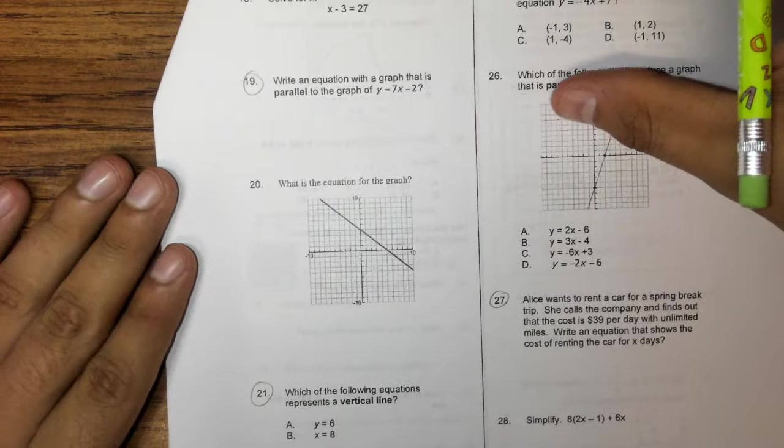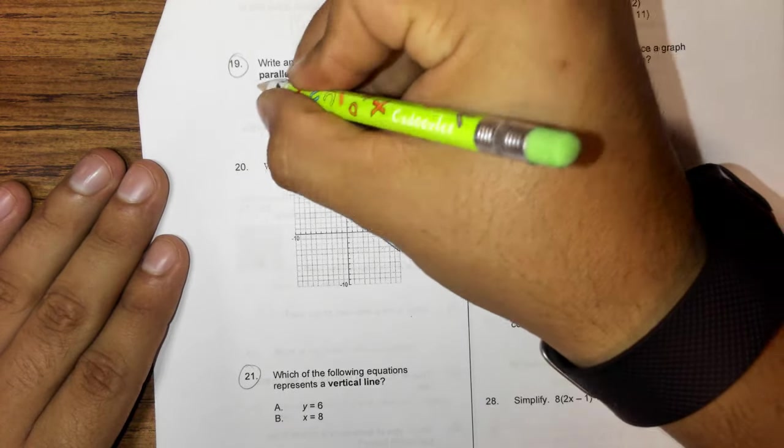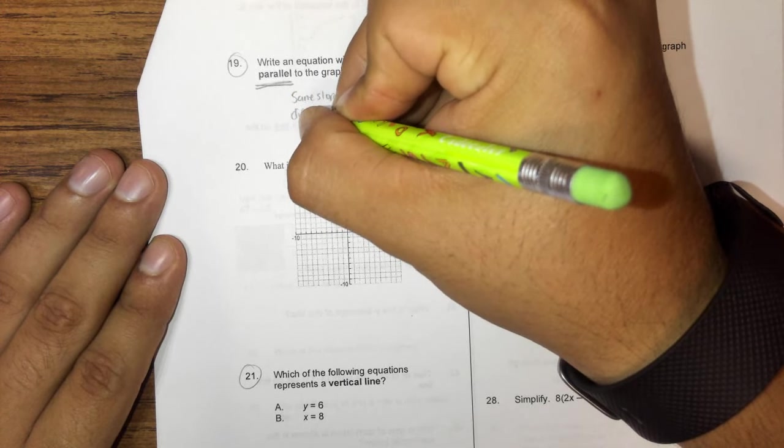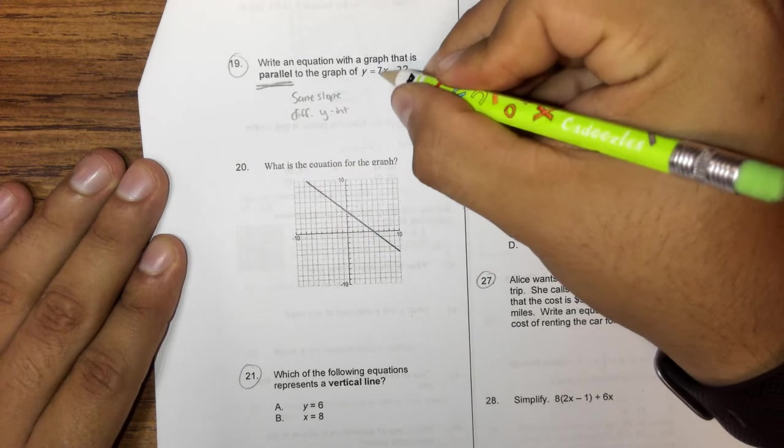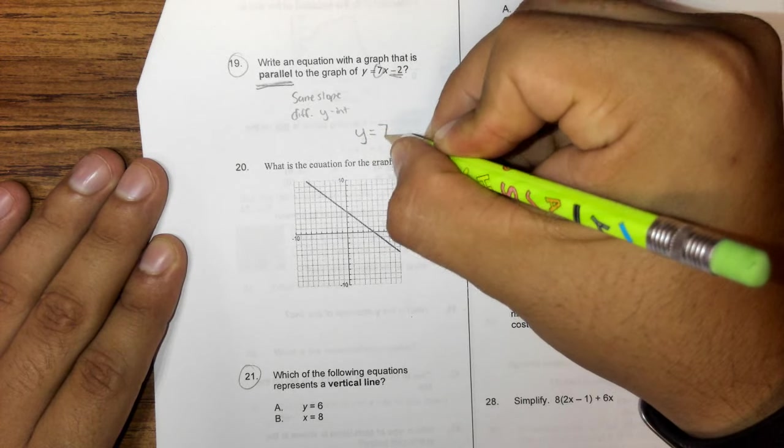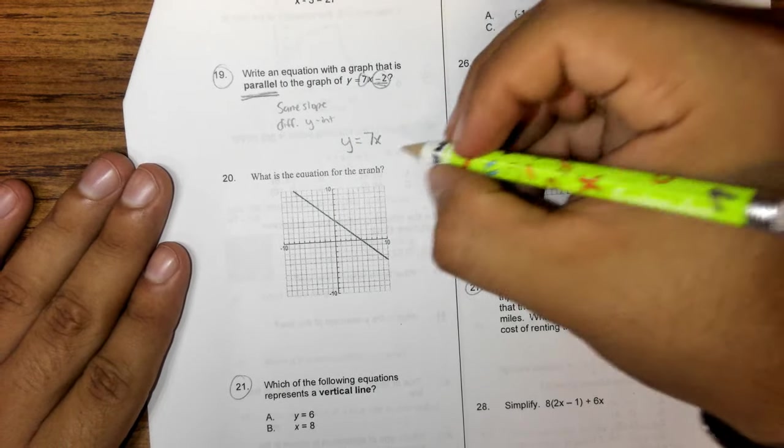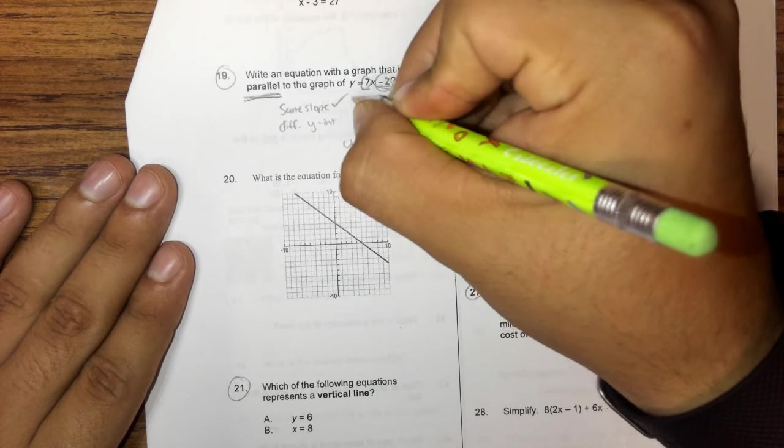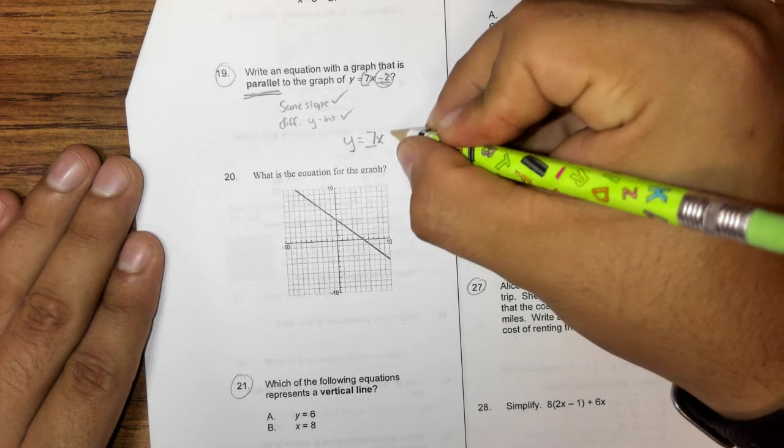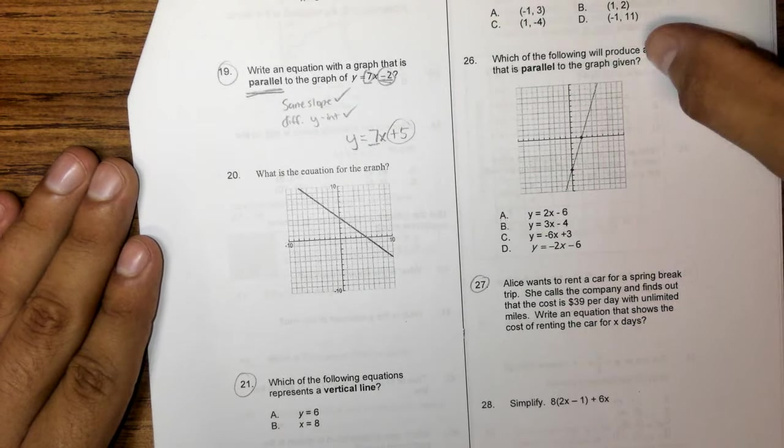Flipping it over, 19. Write an equation with the graph that is parallel to the graph, y equals 7x minus 2. So once again, parallel, we have same slope, different y-intercept. Alright, so my slope again is my 7, my y-intercept is negative 2, so my equation would be y equals 7x, and then you just pick a number that's not minus 2. It can be positive, it can be negative, as long as my slope is the same, as long as that checks out, and that checks out, I should have a line that is parallel. So same slope, different y-intercept. So you have y equals 7x, I'm just going to go in and say plus 5, just for the heck of it. You can choose whatever number you want in there, and it would give you a line that's parallel.